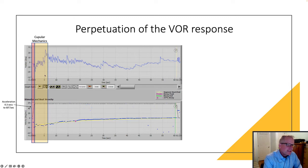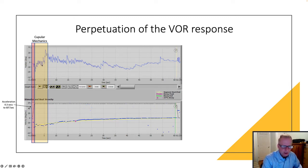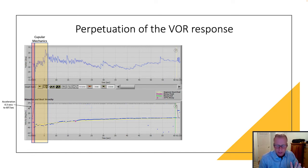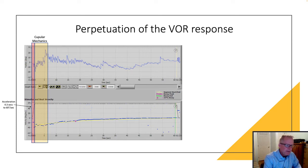After six seconds, the cupula have re-righted themselves to their resting position. So what are we doing producing nystagmus over this 50-second period if the cupula have righted themselves after just six seconds?